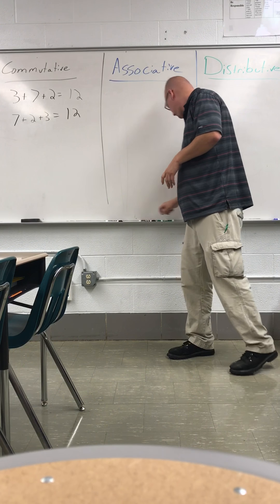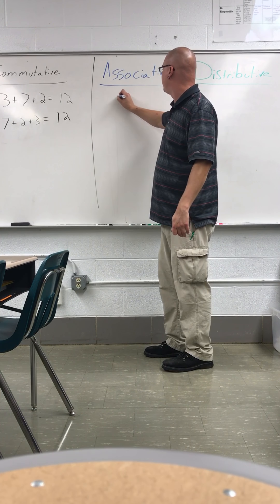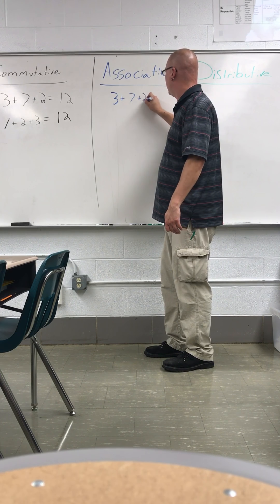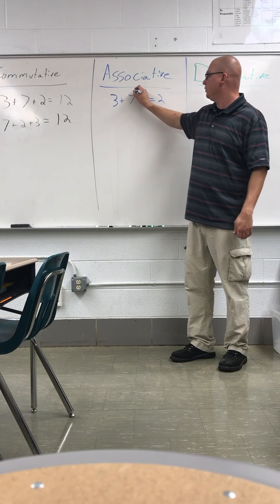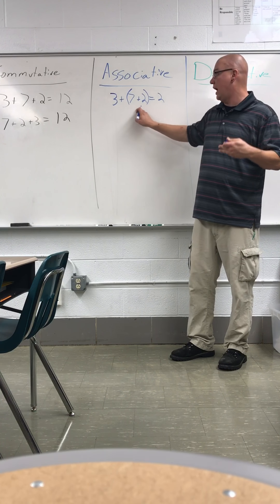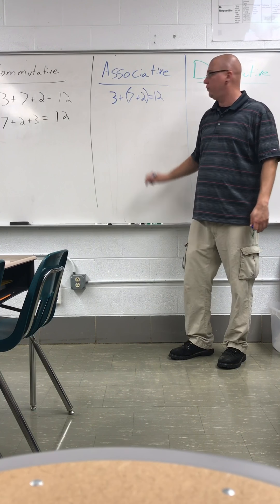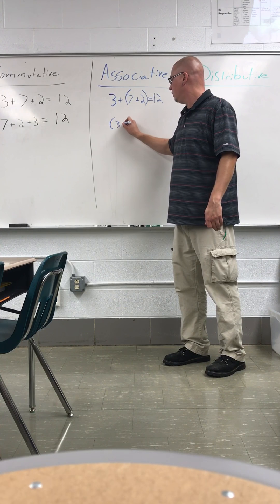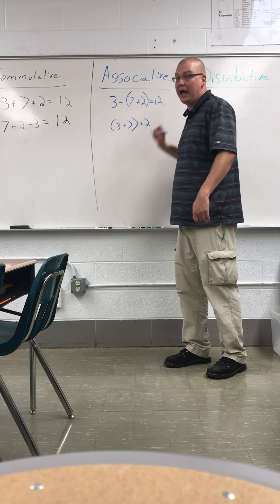Associative property means we can move the parentheses. So let's use the same problem: three plus seven plus two equals twelve. It doesn't matter if we take seven plus two — that's nine — and then add three; we still get twelve. Or if we take three plus seven first, then add two, we still get twelve.